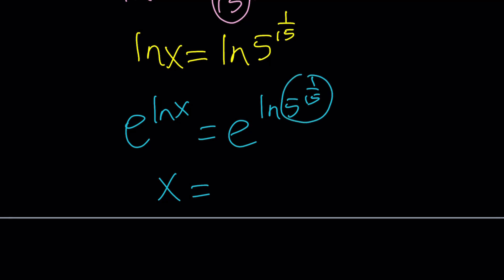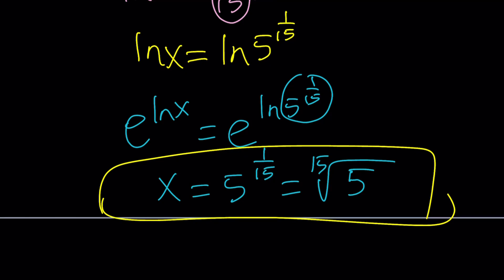And e to the power of ln, this is going to be that. So x is going to be 5 to the power 1 over 15. You could also write it as the 15th root of 5, which doesn't simplify anymore. That's it. Okay. Great. So that basically brings us to the end of the first method.